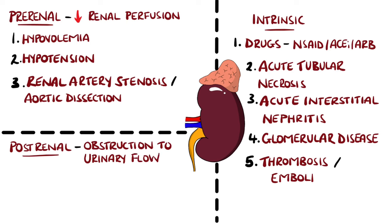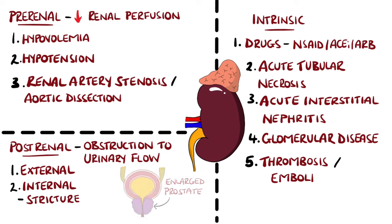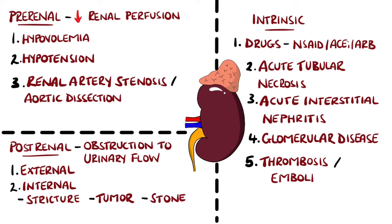Post-renal causes are causes beyond the kidney, due to obstruction of the passage of urine. This could be from outside the urinary system pressing in, such as benign prostatic hypertrophy or an extrinsic tumour, or it could be from within the urinary system itself, such as strictures or intrinsic tumours. Renal stones could also cause an AKI; however, this would generally be affecting one kidney and therefore is more uncommon.